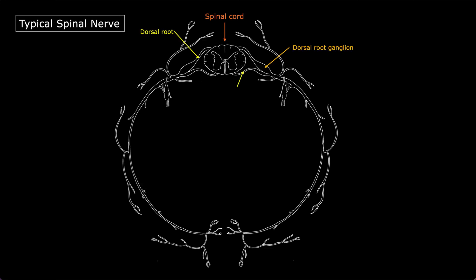Then ventrally, this one is the ventral root. The dorsal root and the ventral root join to form a spinal nerve on both sides. Each spinal nerve has motor, sensory, and sympathetic components.